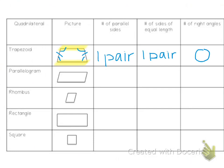A parallelogram — as you can see in the name of the figure, you see the word parallel. A parallelogram has two pairs of parallel sides. The top and the bottom are parallel, and the left and the right are parallel.